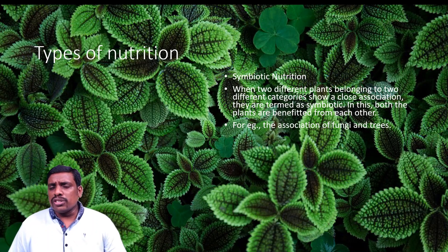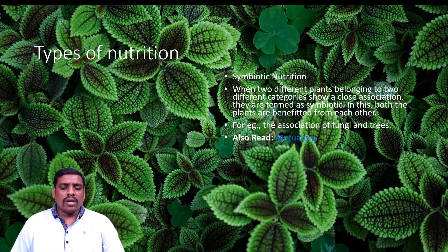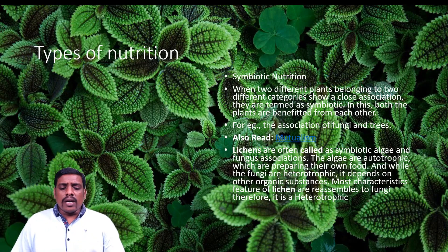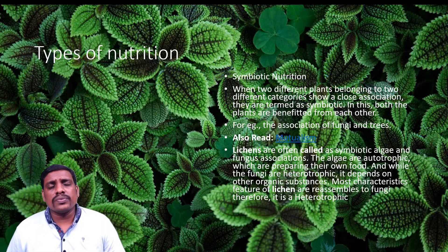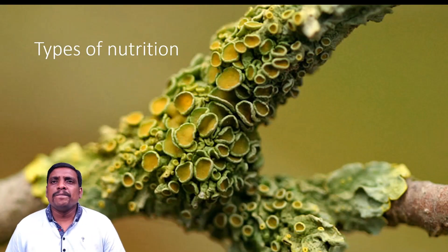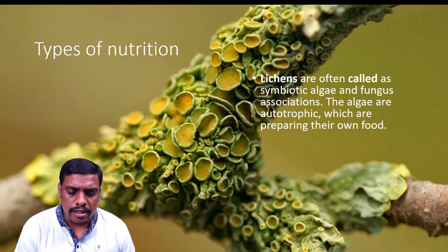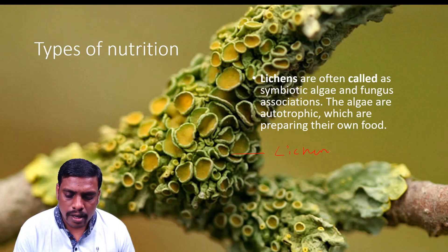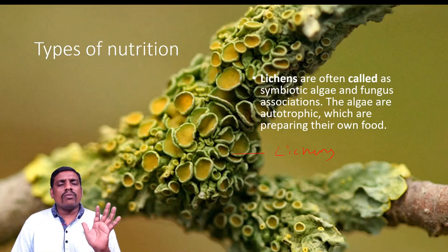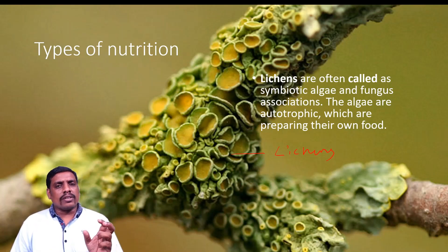For example, the association of fungi and trees: lichens are often cited as a symbiotic example, living on trees and showing symbiotic nutrition. Lichens are heterotrophic organisms whereas trees are autotrophs. You can see lichens on the surface of a tree — the tree gets no harmful effects from the lichen, and the lichen gets no harmful effects from the tree. Both get mutual benefit, which is why it is a symbiotic association.